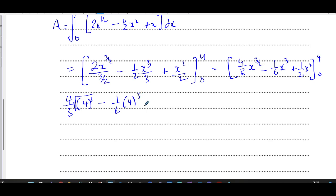Four cubed plus one over two times four squared. And you're going to have minus zero, because when you put zero in here, everything becomes zero. So the square root of 4 is 2, 2 cubed is 8, so 8 times 4 is 32. So 32 over 3 minus 64 over 6 plus 16 over 2, which is 8.